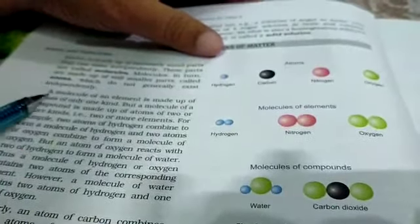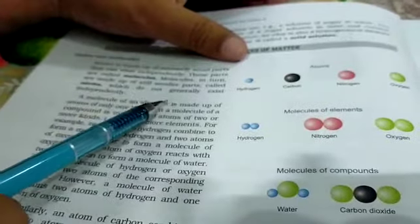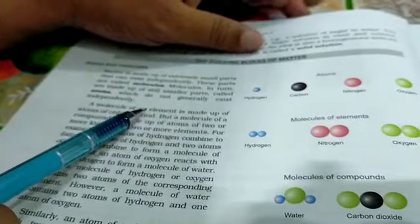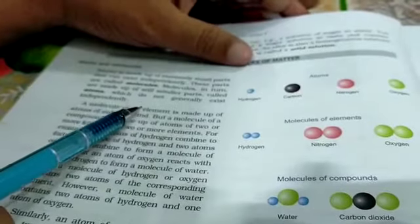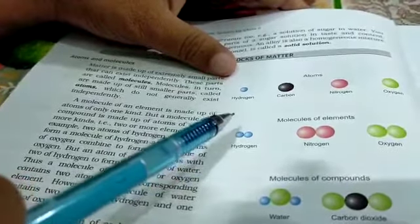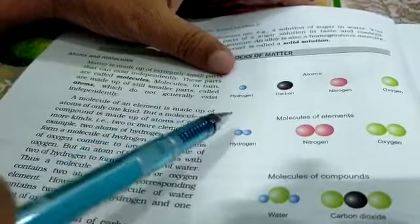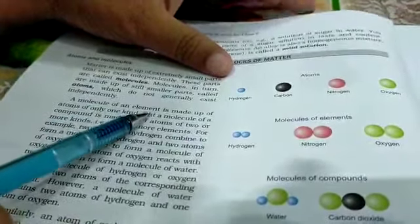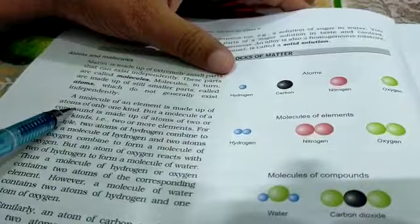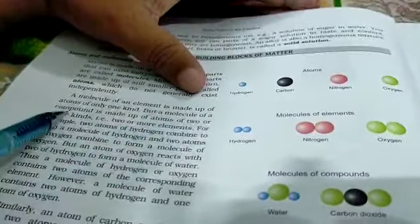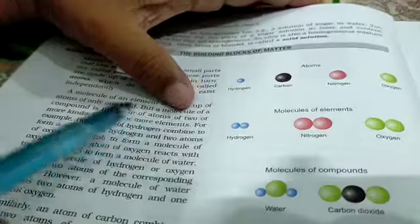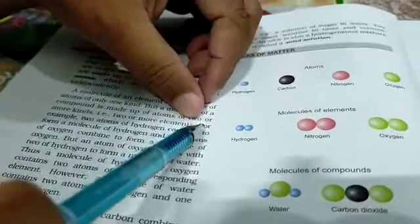A molecule of an element is made up of atoms of only one kind. किसी भी एक तत्व के जो molecules होते हैं वो एक ही प्रकार के atoms से मिल करके बने होते हैं। जैसे कि hydrogen के molecule में एक ही प्रकार के atoms होते हैं। But a molecule of a compound — किसी भी compound के molecules — is made up of atoms of two or more kinds, यानी दो या दो से ज़्यादा प्रकार के atoms से मिल करके बने होते हैं।